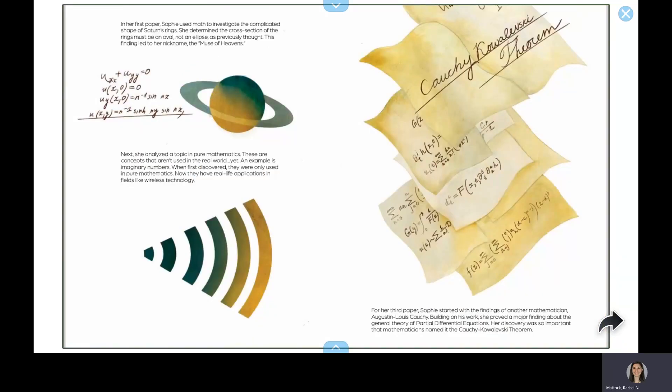In her first paper, Sophie used math to investigate the complicated shape of Saturn's rings. She determined the cross-section of the rings must be an oval, not an ellipse, as previously thought. This finding led to her nickname, the Muse of Heavens.